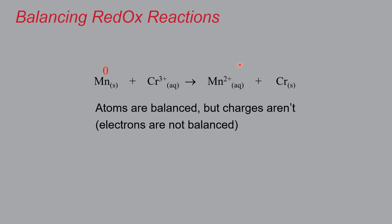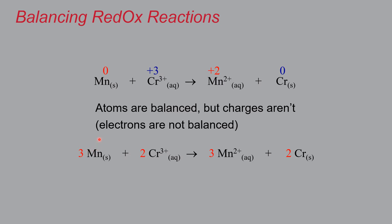Looking at the oxidation numbers: magnesium goes from zero to plus two, and chromium goes from plus three to zero. The magnesium loses two electrons, but chromium ions need to pick up three. You can fix this by fiddling with the coefficients: three magnesium atoms react with two chromium³⁺ ions to give three Mg²⁺ ions and two neutral chromium metals. Now the overall charge is plus six on both sides — balanced.